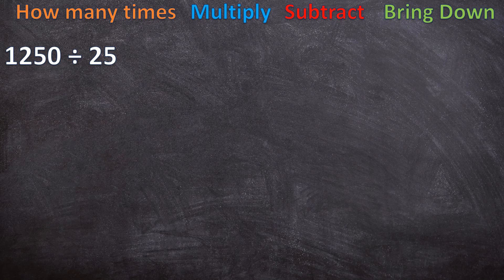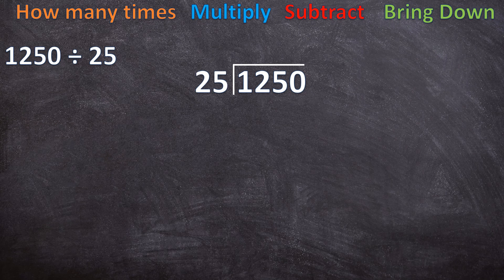Our next example is 1250 divided by 25. This one is going to look a bit different, but it doesn't matter — you follow the exact same four steps. Write this in the correct format: dividend inside the bracket, divisor in front. We start from the left. How many times can 25 go into 1? It cannot, so we leave the space above the 1 open.